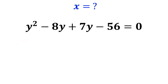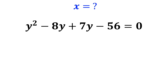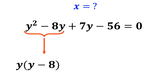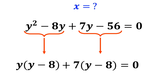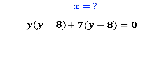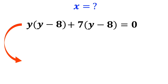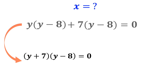We simplify this equation as follows. Instead of y squared minus 8y, we write y times (y minus 8). And instead of 7y minus 56, we write 7 times (y minus 8), which equals 0. Now we factor out (y minus 8), and this equation simplifies to (y plus 7) times (y minus 8) equals 0.